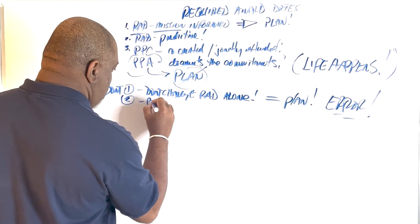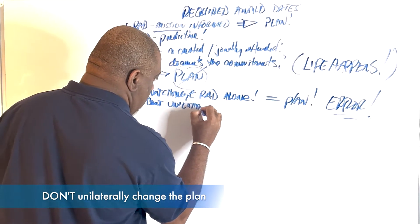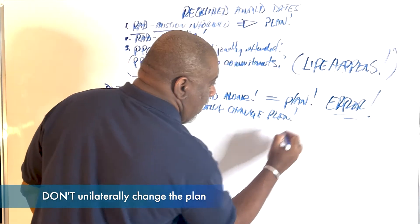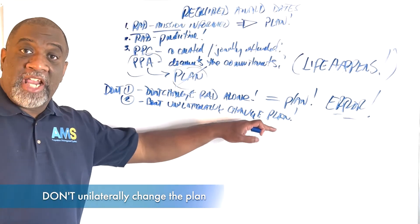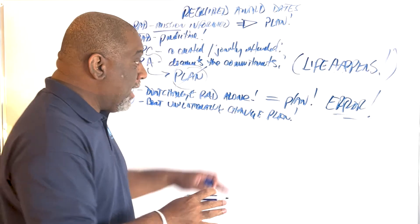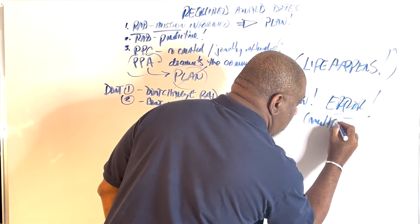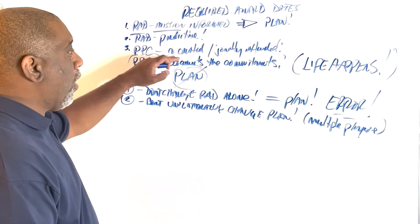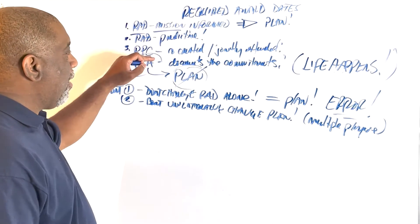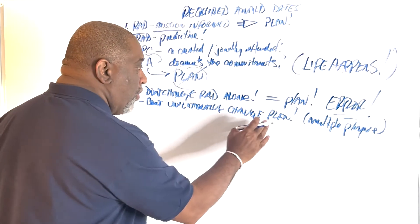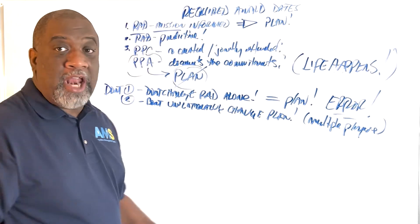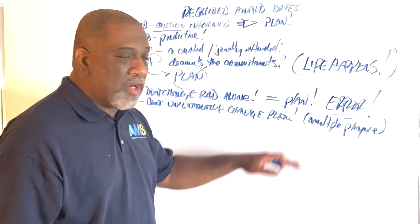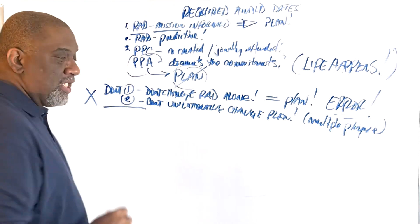Here's the second don't, don't unilaterally change the plan. Because the plan has multiple players. The plan is reflective of your co-created and jointly attended conference. So if you change it unilaterally, it may not be executable, and it may not be known that it's changed. So let's not do those things.